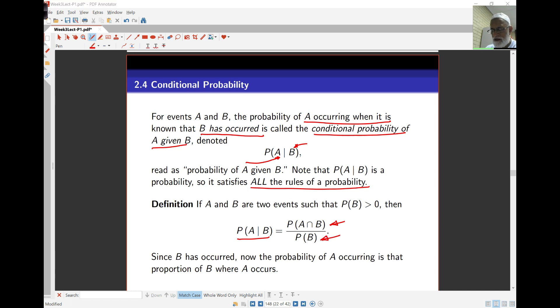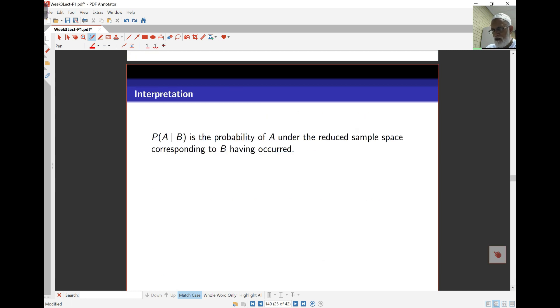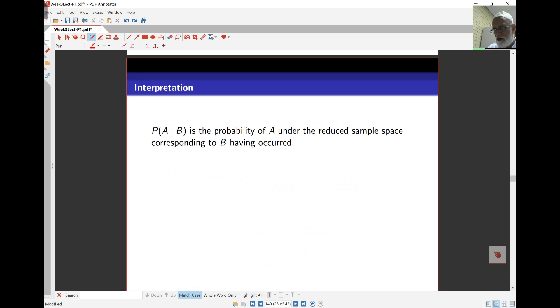So the idea here is, once we know that B has occurred, A can only occur where B has already occurred. So the top line is probability of A intersect B. And so if I look at this from the point of view of a Venn diagram, you'll see what it means here, that if I'm looking at now probability of A given B has occurred.